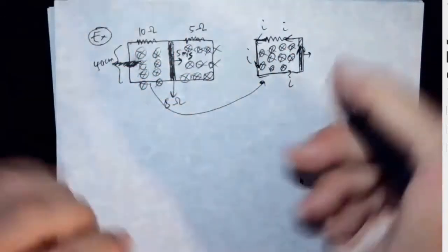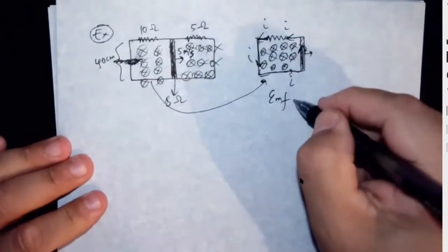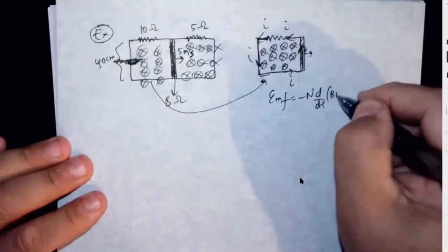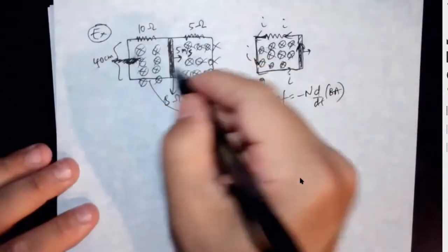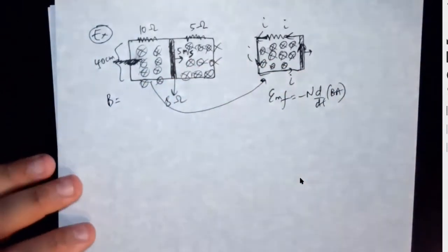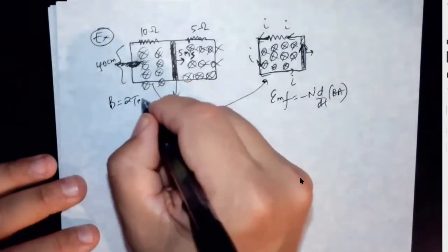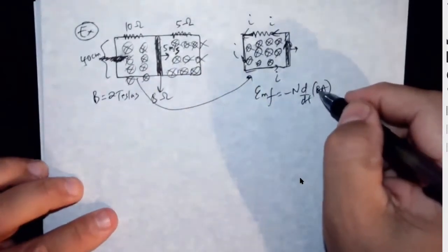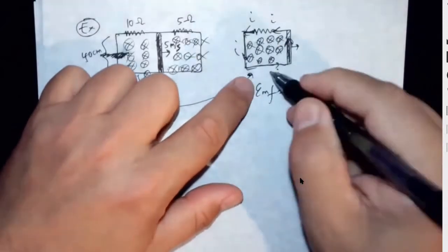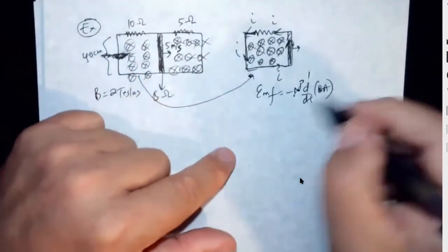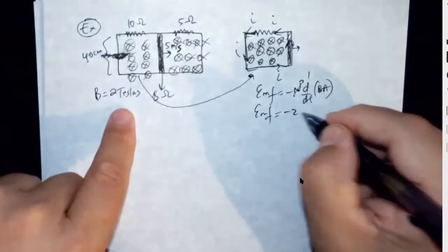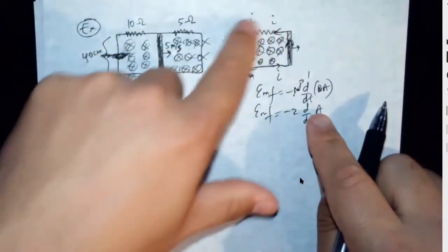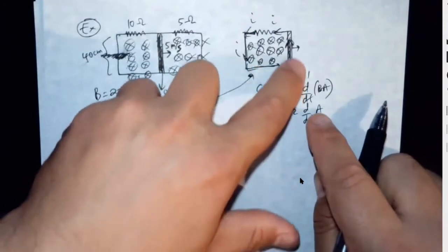So then we can calculate the EMF induced: EMF = -N * d(BA)/dt. The strength of the B field is 2 Tesla. The B field itself is not increasing and the number of turns is just one. So EMF = -1 * (-2) * dA/dt. The only thing increasing is the area. The area is X times 0.4 meters, so dA/dt = 0.4 * dx/dt.